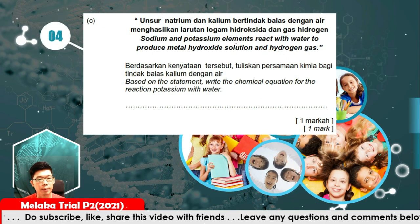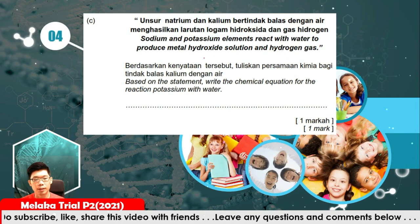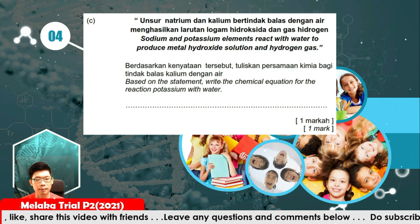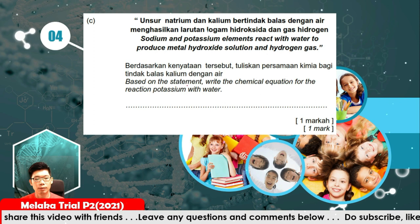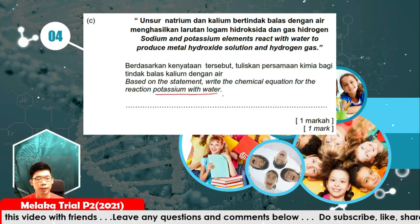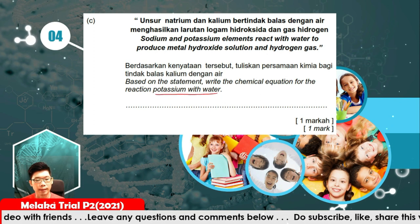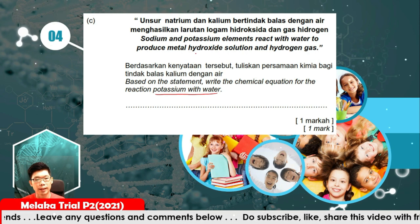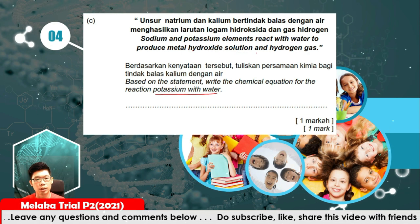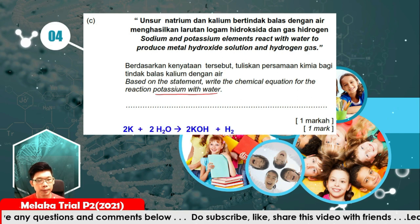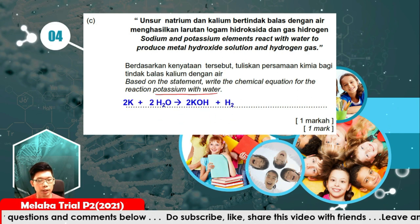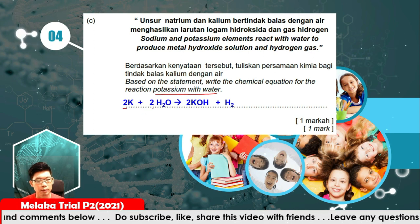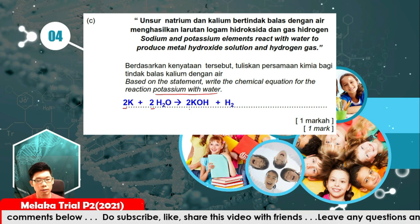Sodium and potassium elements react with water to produce a metal hydroxide solution and hydrogen gas. Write the chemical equation for potassium with water. Potassium is a metal that reacts with water to produce potassium hydroxide solution and hydrogen gas. We need to balance the equation: potassium and water coefficients are both times 2, and potassium hydroxide also times 2.